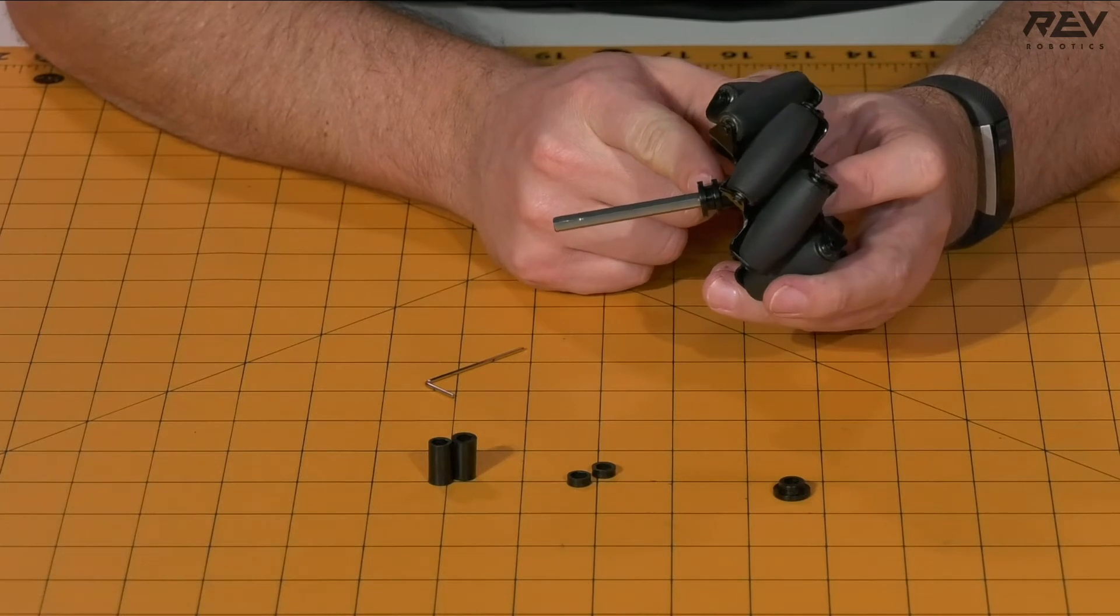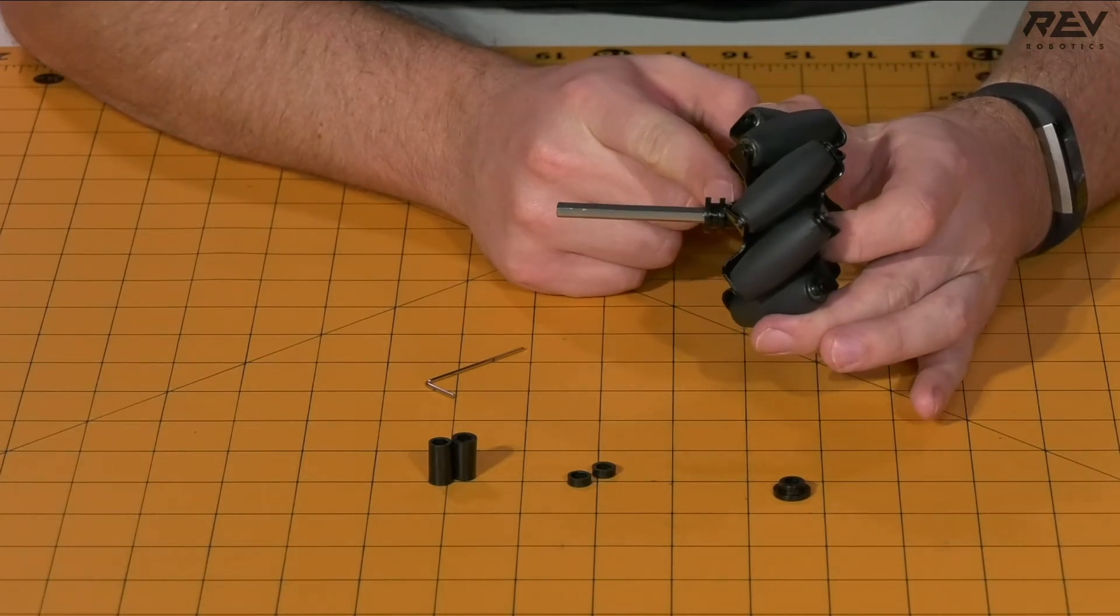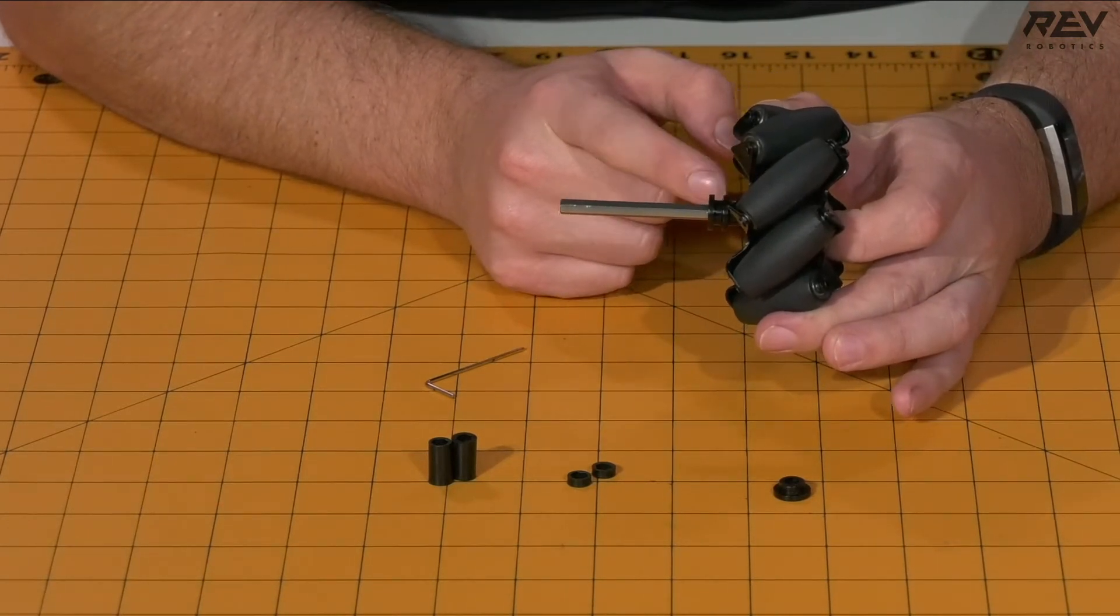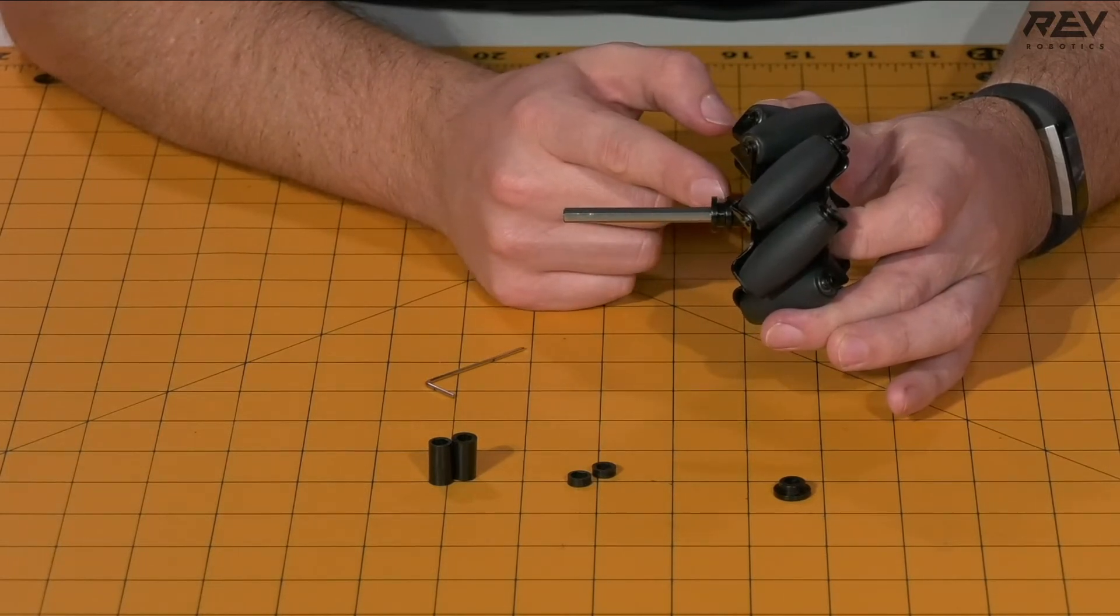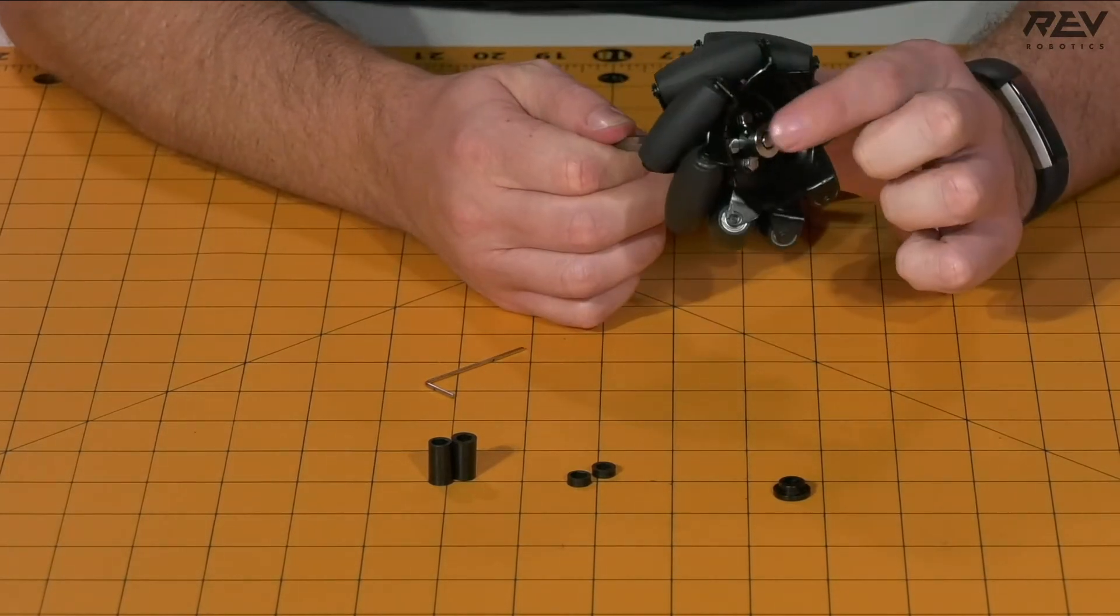Note the location of the flanges of the through-bore bearings, as it's really important for later on in the assembly. Both of them are facing away from the shaft collar end.